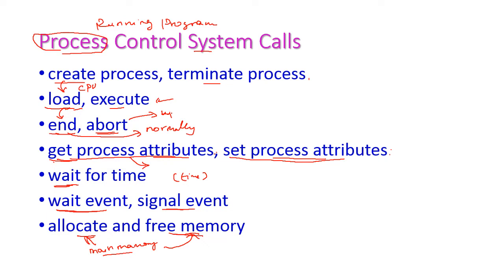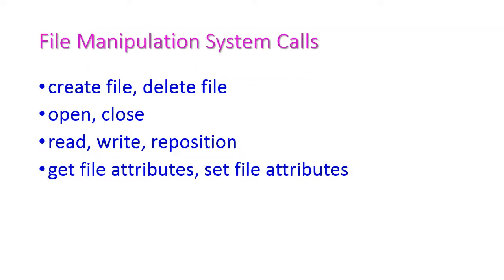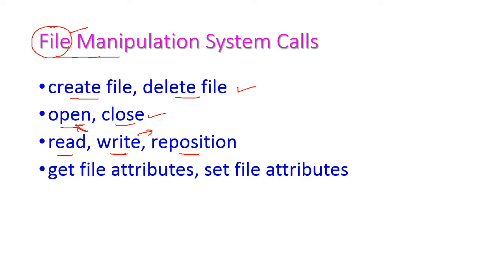The second category of system calls is file manipulation system calls. In an operating system we can use many different types of files, and to manage those files we have a set of system calls under file manipulation. The first ones are to create a file and to delete a file. To open the file for reading and to close it after reading is complete, we have open and close system calls. Then read, write, and reposition — read means we read the file, write means we write content into a file, and reposition means we change the location of the file from one location to another in main memory.